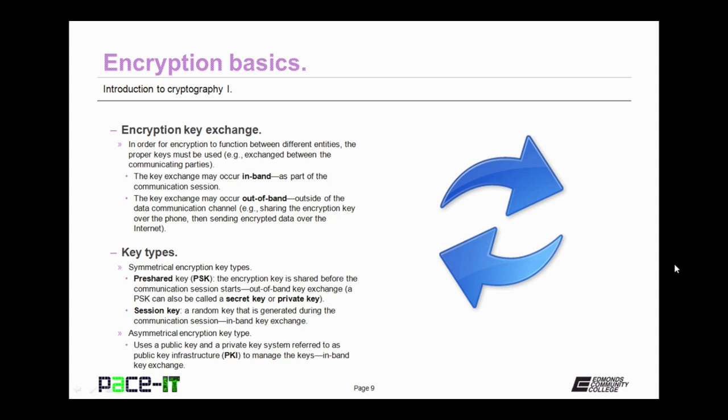Then there is the asymmetrical encryption key type. The most common method uses a public key and a private key system, referred to as a public key infrastructure, or PKI, to manage the different security keys. And in most cases, PKI is implemented through an in-band key exchange.